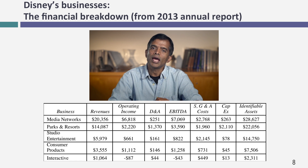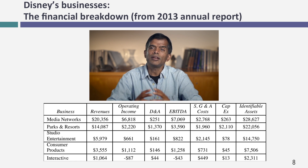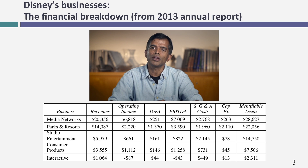Those are five different businesses, and Disney gives me revenues, income, depreciation, capital expenditures, and even identifiable assets by business. I'm going to use this information to come up with a bottom-up beta for Disney. The first step is to get betas for each of the five businesses. I'm going to take the movie business — where I had the easiest time — as the example, and discuss how I came up with betas for the others later.